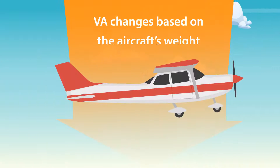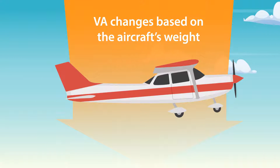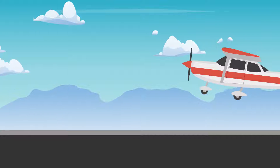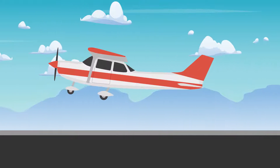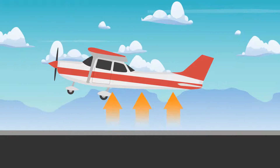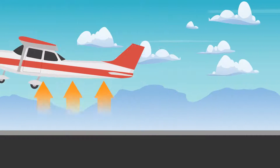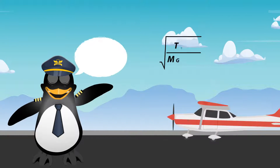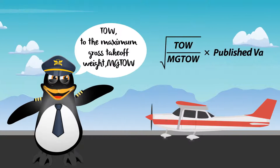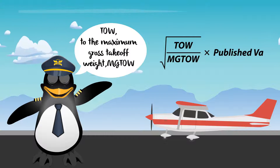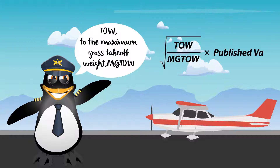VA changes based on the aircraft's weight and can be found by taking the square root of the ratio of the takeoff weight (TOW) to the Maximum Gross Takeoff Weight (MGTOW).